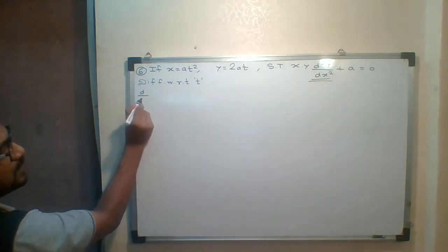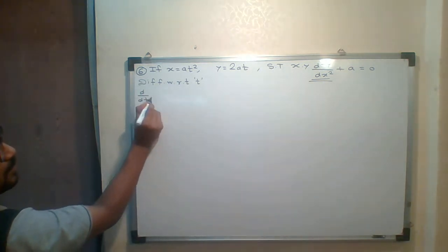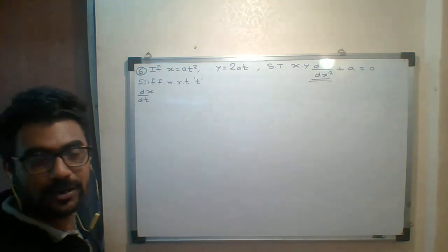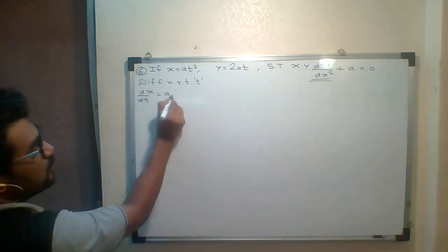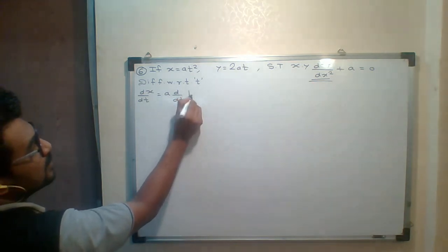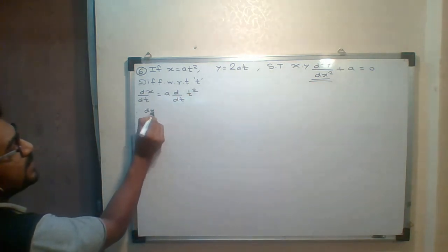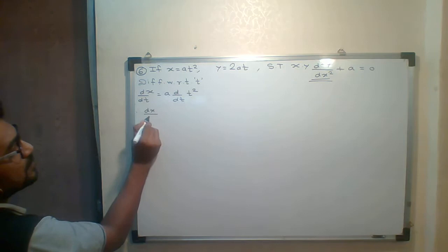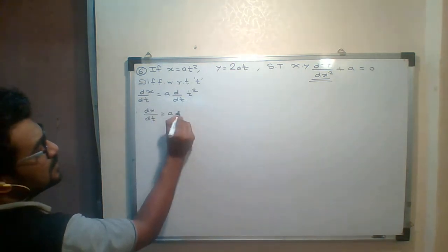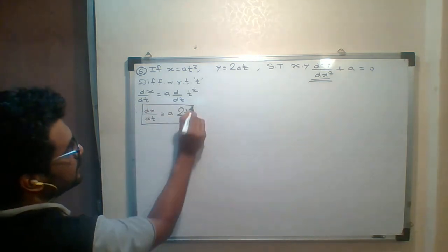First, let me find d/dt of x. a is constant, so d/dt of t squared — what is d/dt of t squared? It is 2t. So I got dx/dt equals 2at.